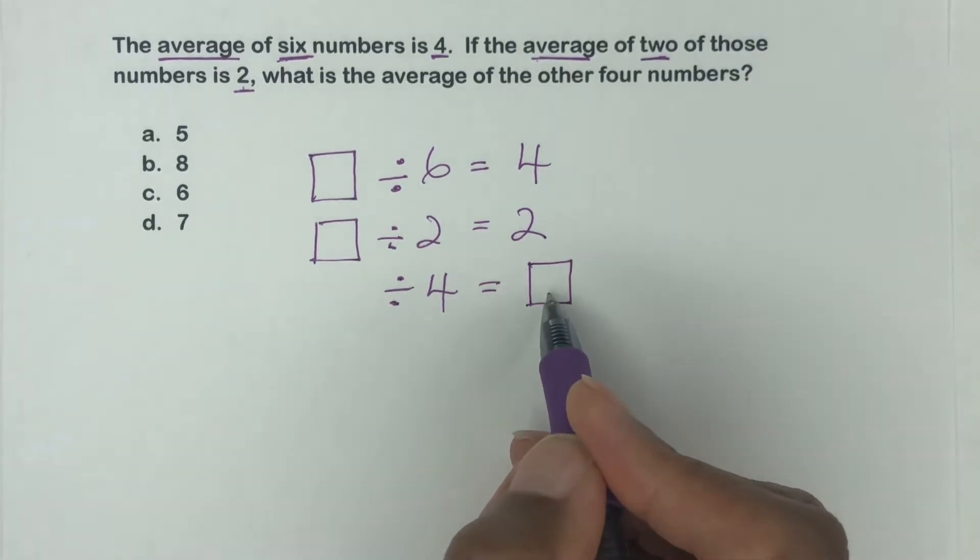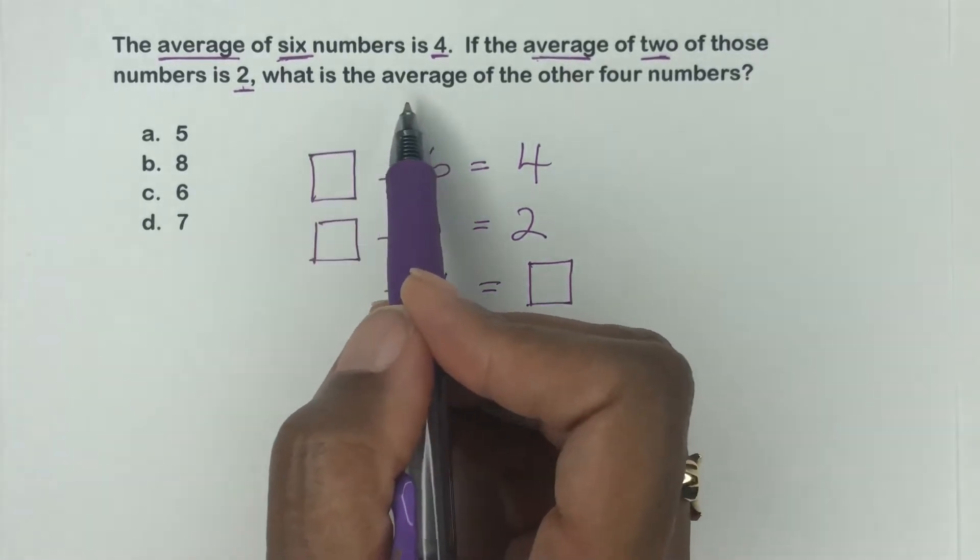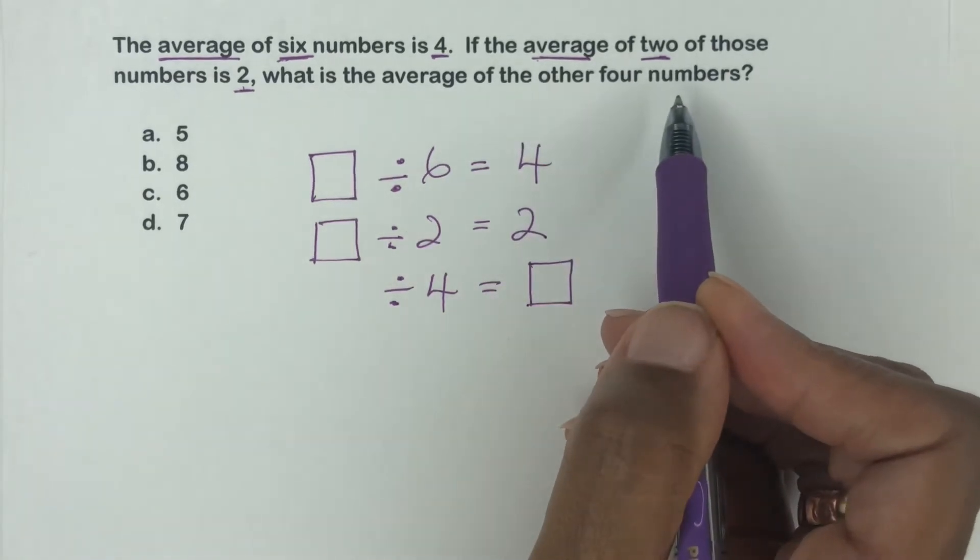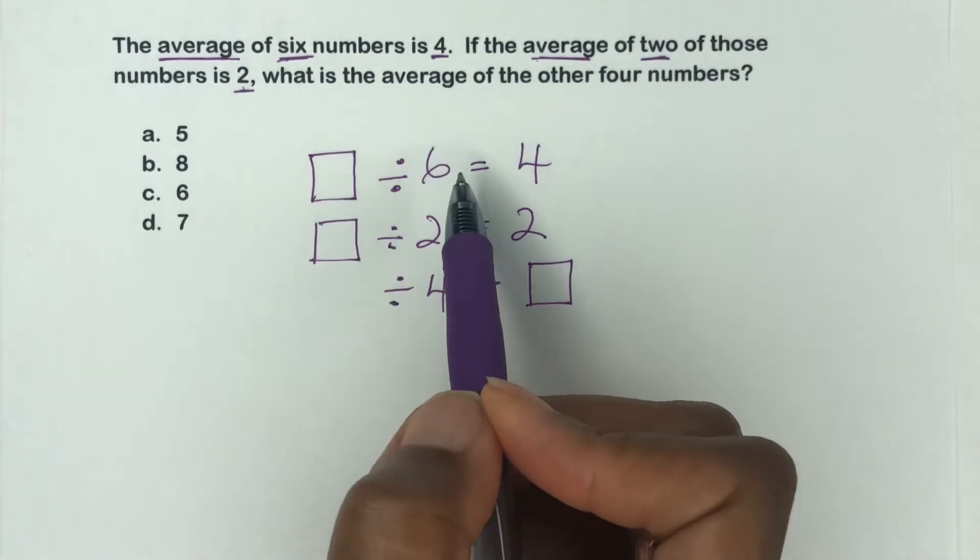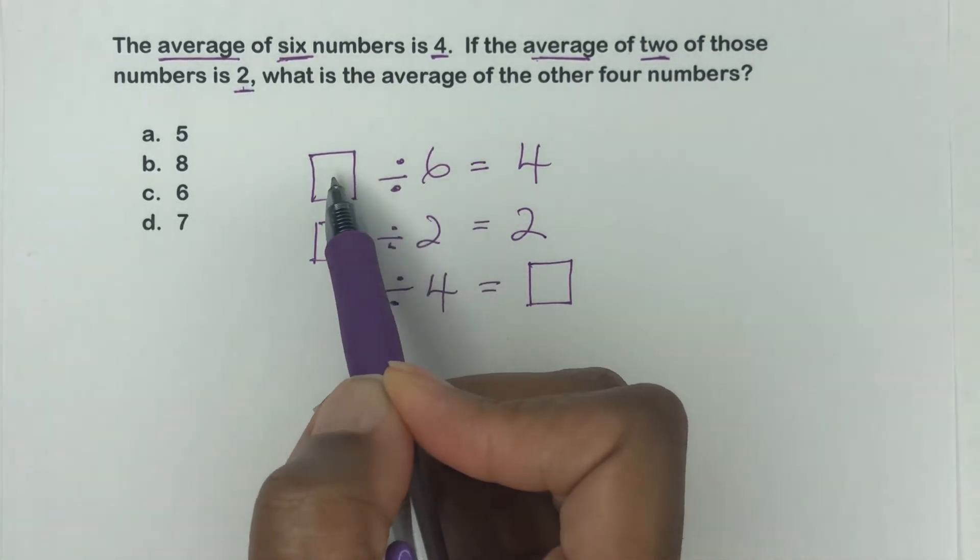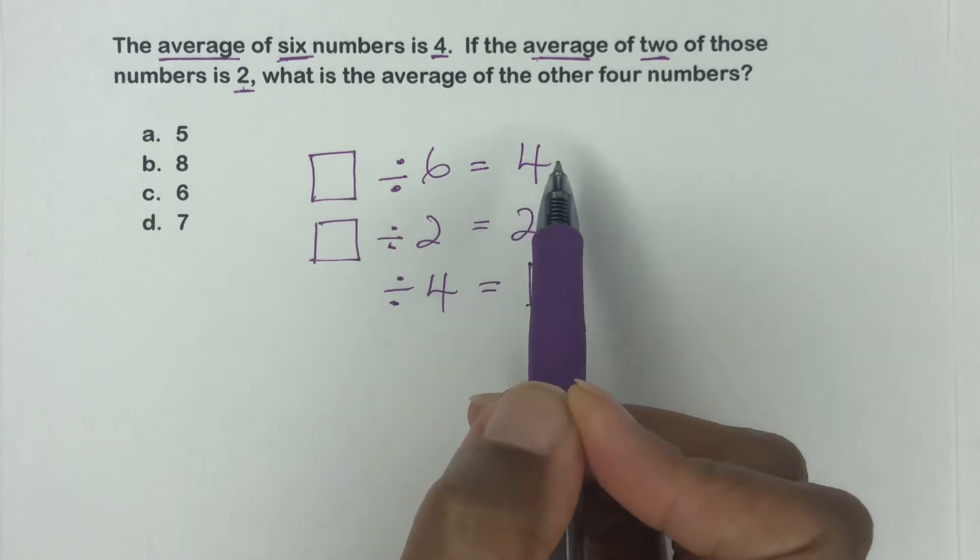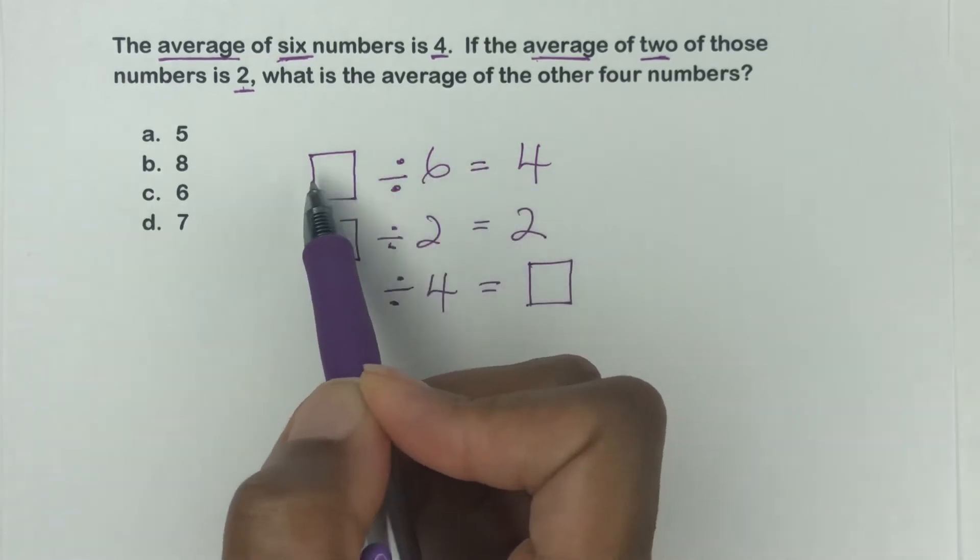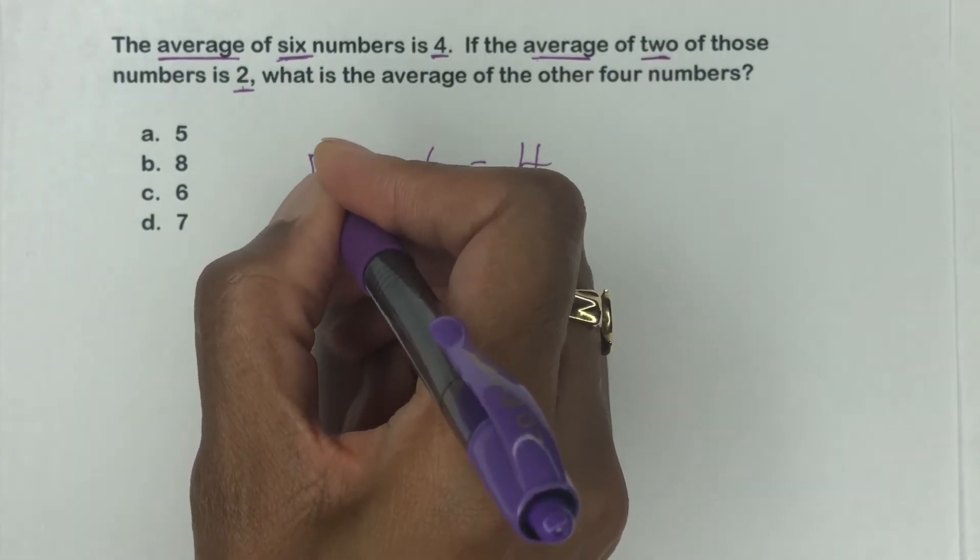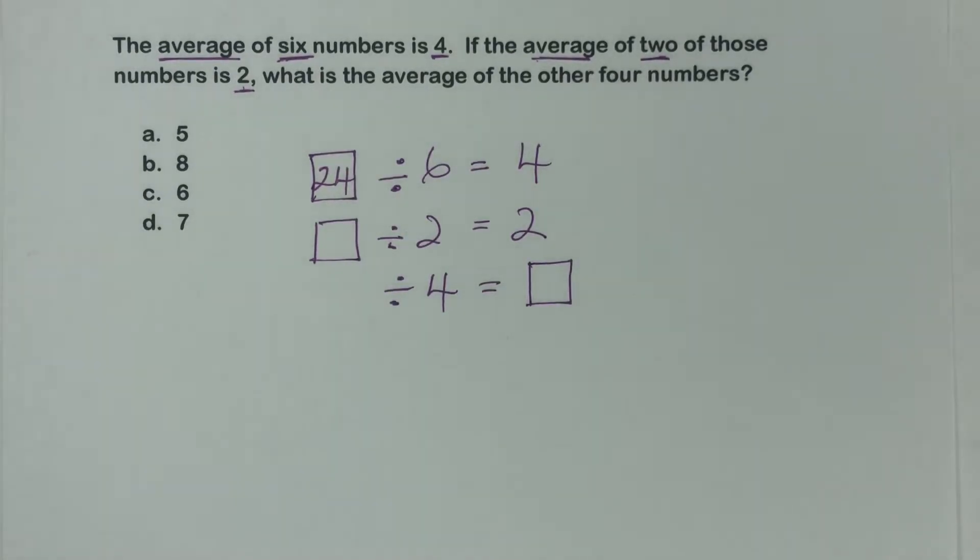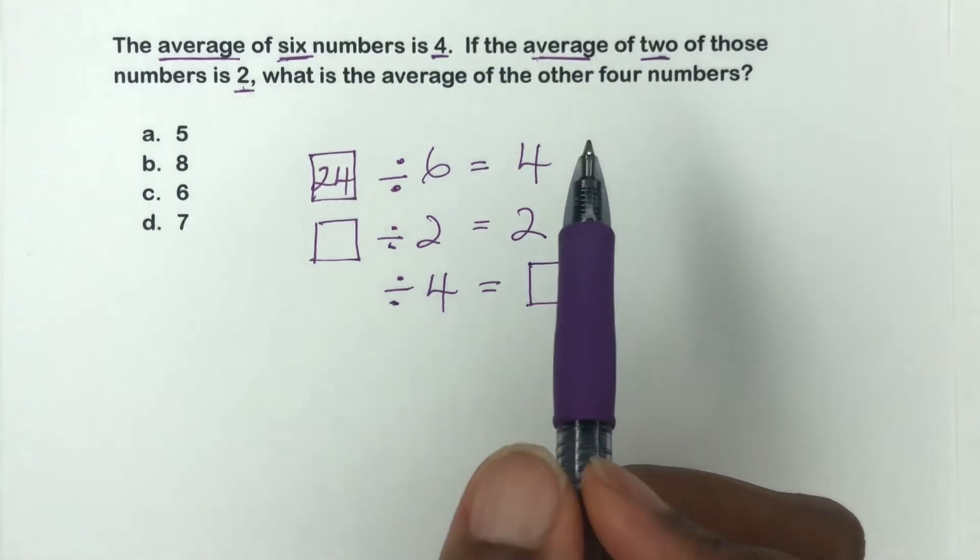And then this here, this square here will give us the answer to what is the average of the other four numbers. So let's put, let's fill in all these spaces now. So we got everything set up. So what divided by six equals four or four times six is what. So six times four, four times six. So this will give us 24 in the box here. Okay, so we got that part sorted out.